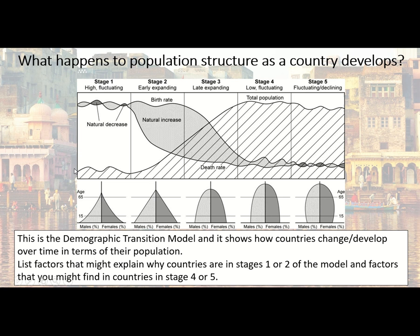The only places at stage one would be very remote Amazon tribal communities. As countries develop, the first priority is survival — working out what won't kill them — so their death rate decreases. But their birth rate stays high because contraception isn't prioritized when survival is the focus. Survival is about learning what stops you dying; education on birth rates comes later.